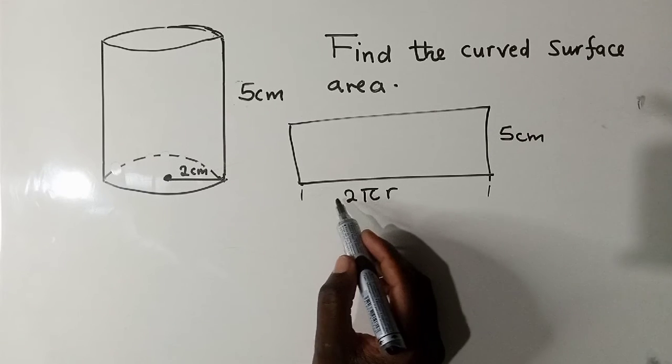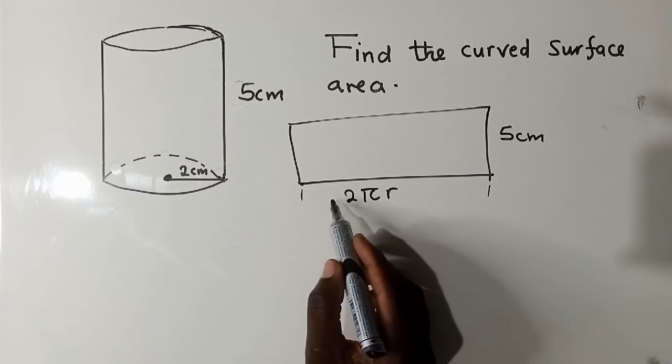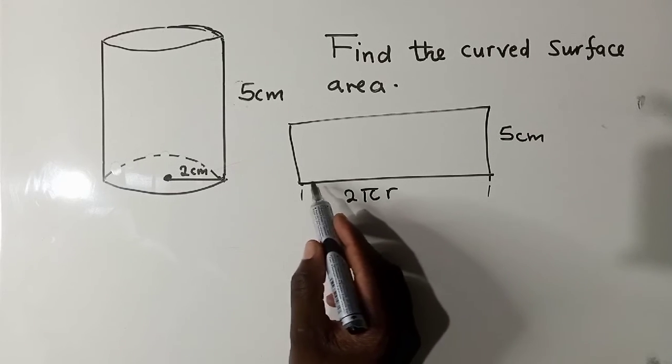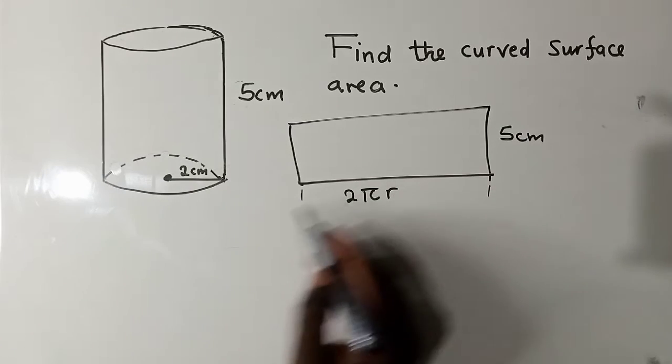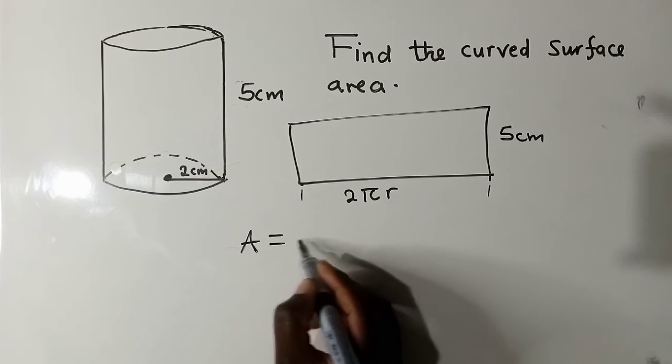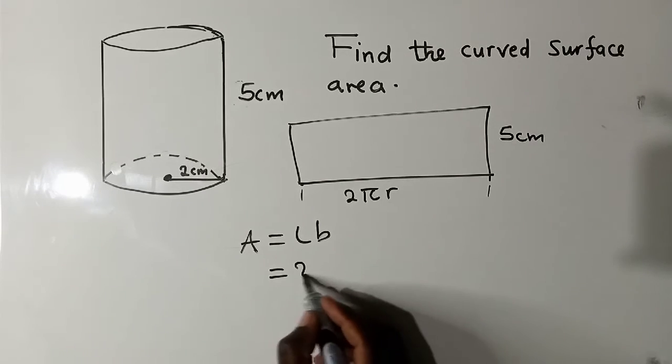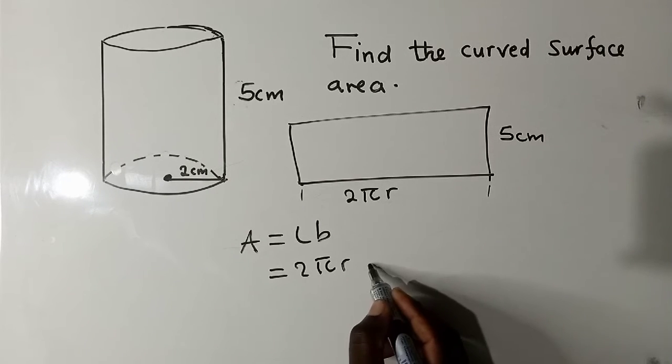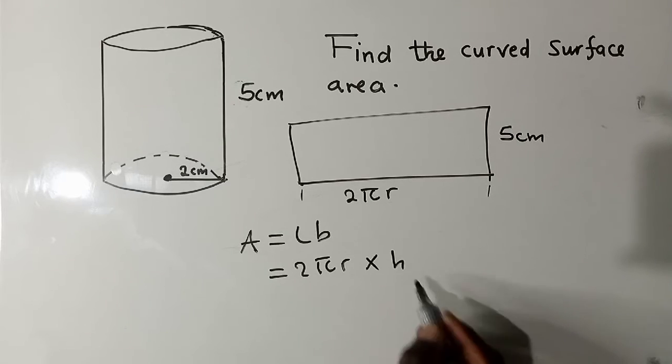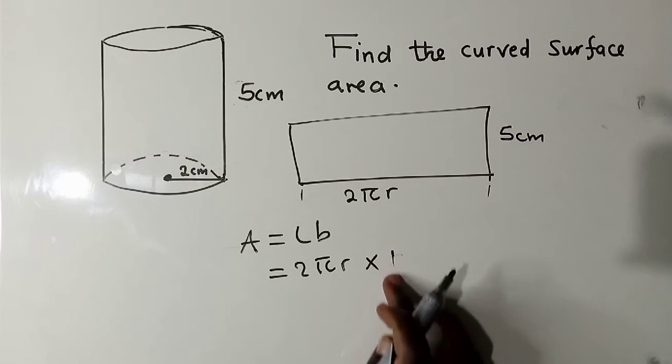Because we have formed a rectangle here, we know that area is equal to L times B. What is our L? It is 2πr times the height.